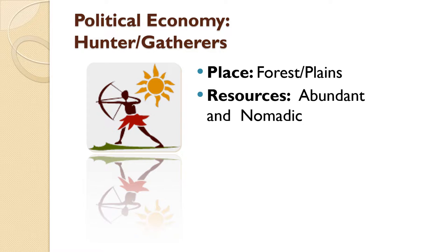Hunter-gatherer societies follow where the food is. Seasonal variations and over-hunting or over-picking an area might lead them to go elsewhere. Most hunter-gatherer societies are very nomadic — they wander around chasing the climate and the food. If there's a drought or lack of food in an area, they move somewhere else. This means they don't carry a lot with them because they need to be able to move quickly. Housing structures, clothing, and the gathering of possessions are very minimal.